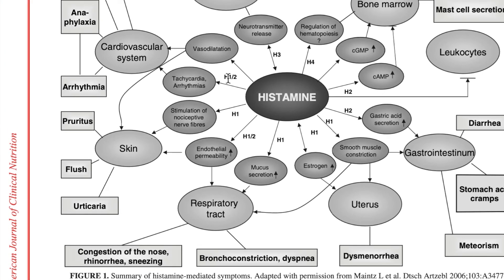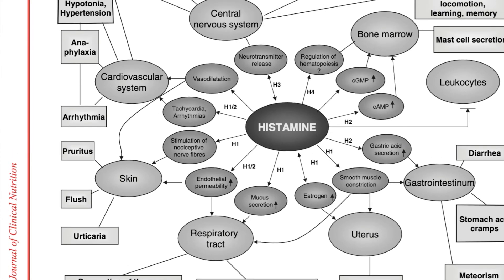We can also see that histamine stimulating H1 and H2 receptors causes tachycardia and arrhythmia, impacting our cardiovascular system. It can actually lead to anaphylaxis, and also causes hypertension and hypotonia, which is decreased muscle tone.